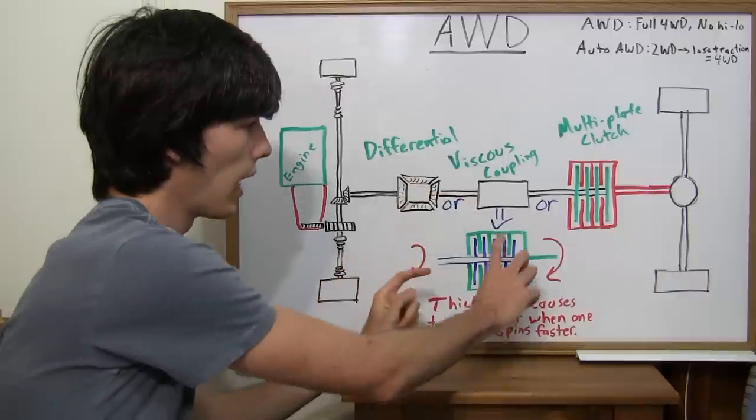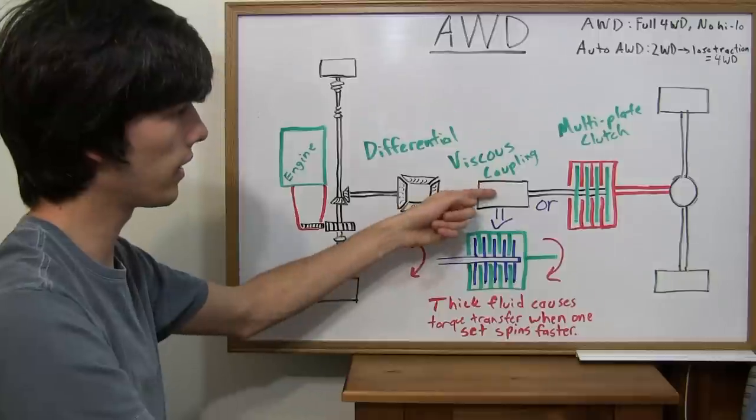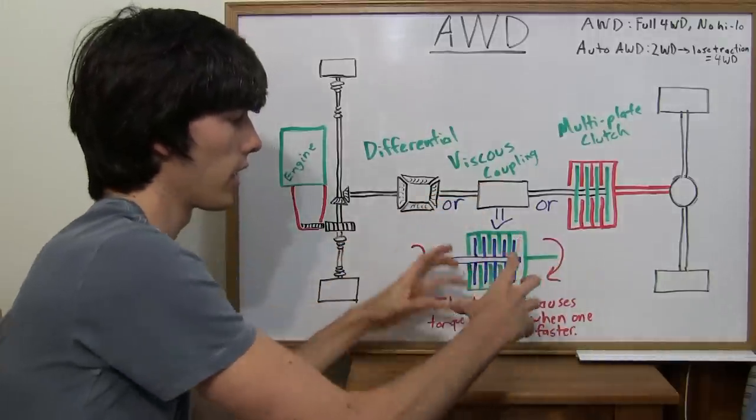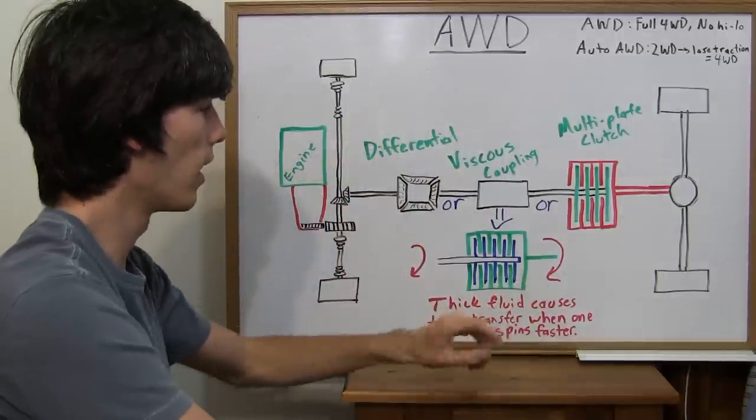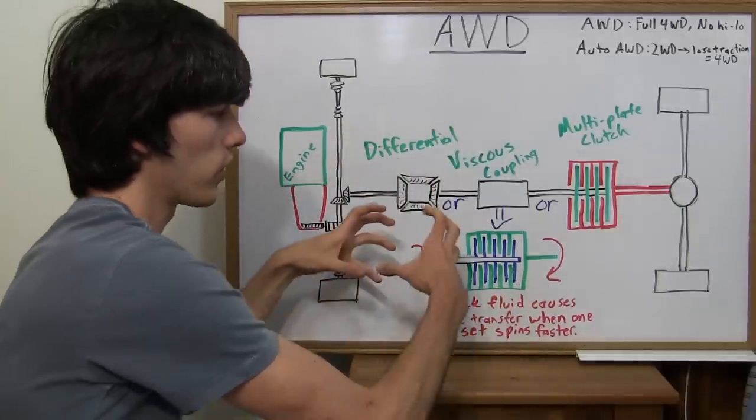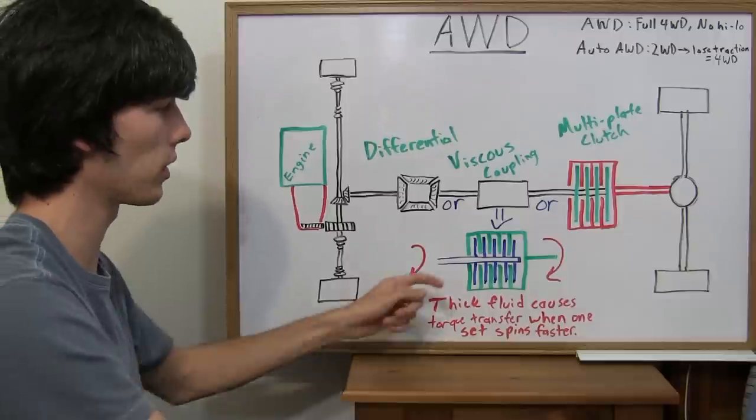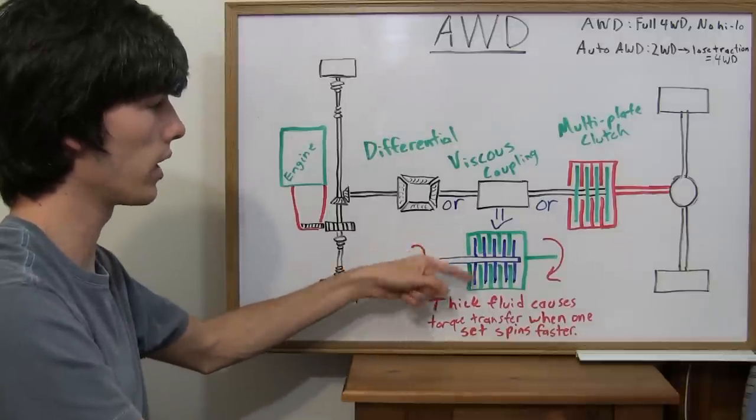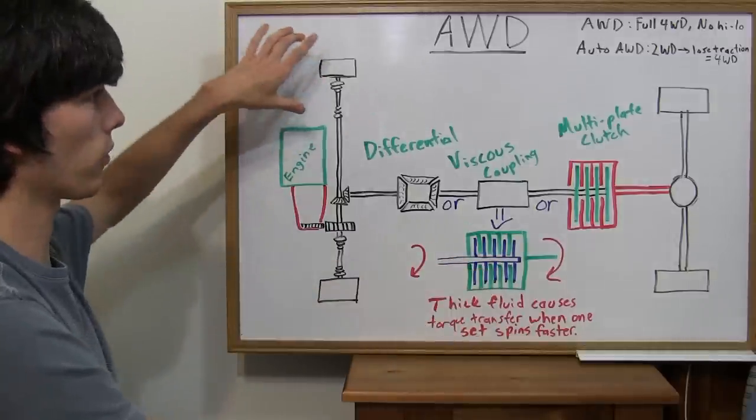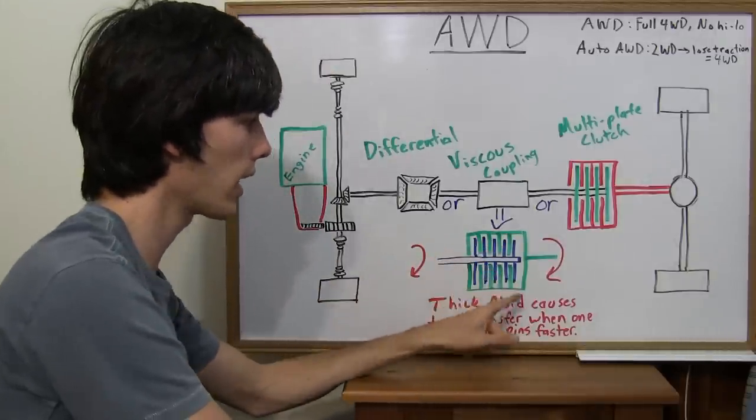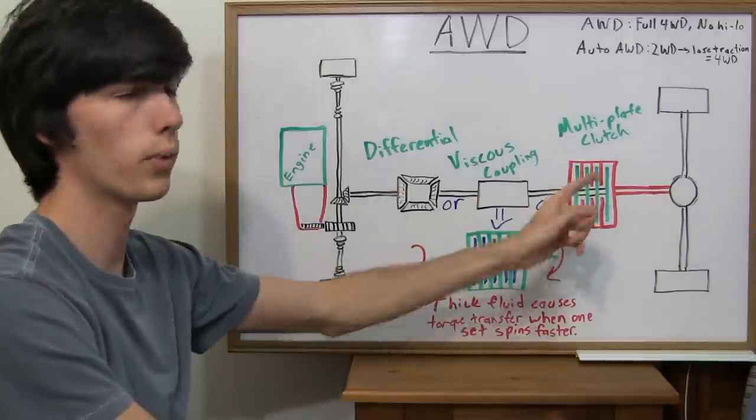So, how this works is inside this viscous coupling, here's one shaft coming in here, and then this is the other shaft. So, there's a series of discs inside, and then there's an outer casing that has like a reverse disc. It's almost like a multi-plate clutch pack, but a little different because it's just a series of discs. And then there's a thick fluid inside. So, say the blue and green rotate separately. So, say the blue is rotating much more quickly than the green because your front tires are spinning.